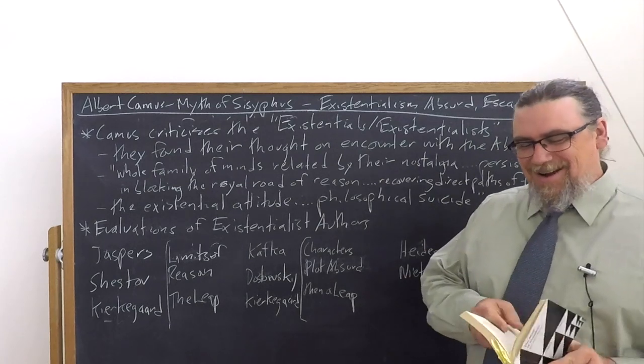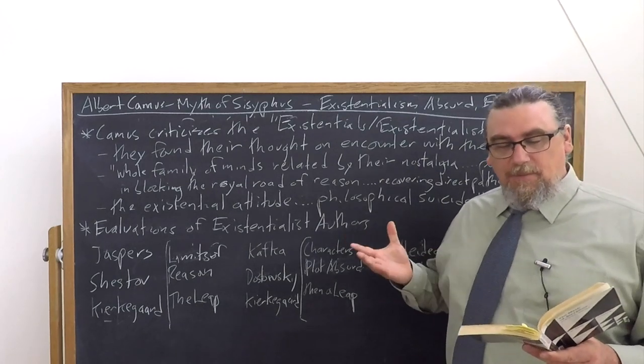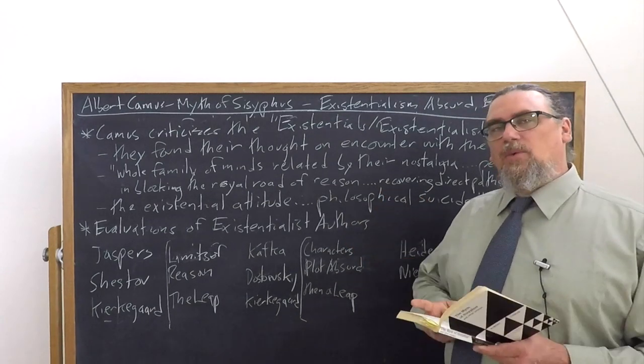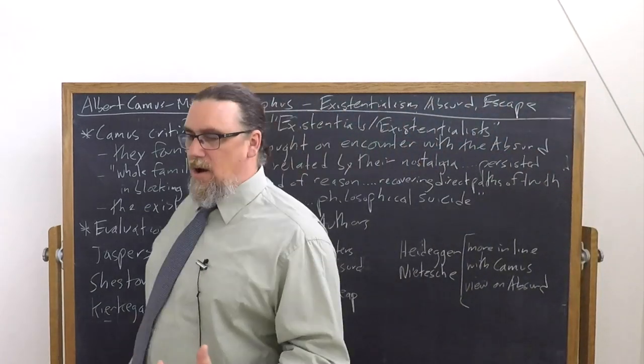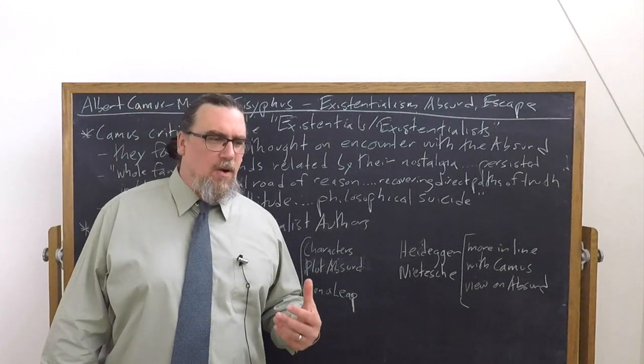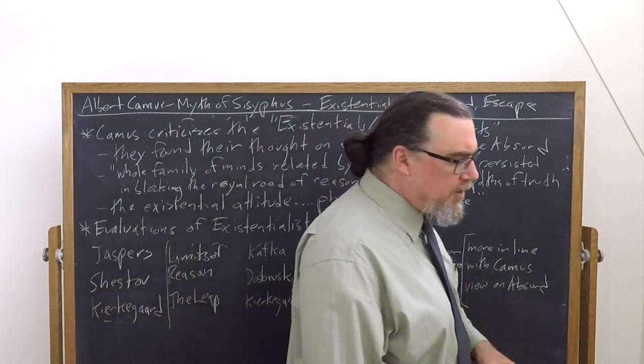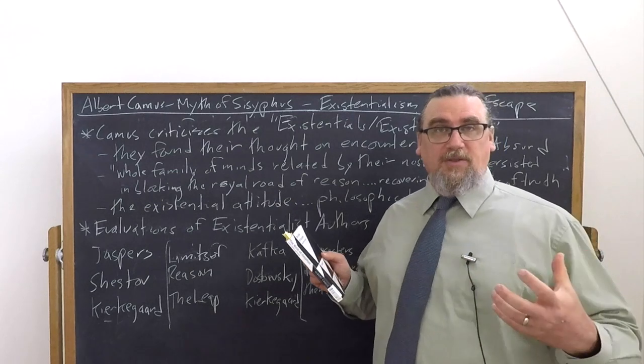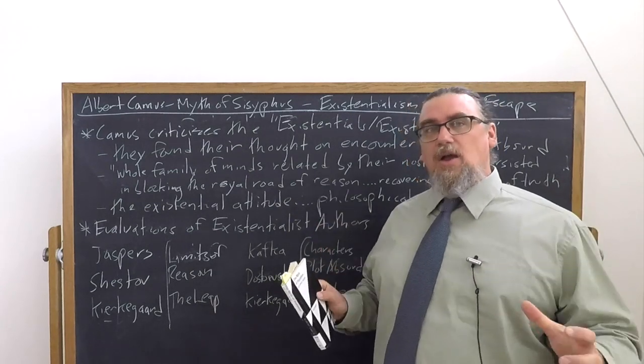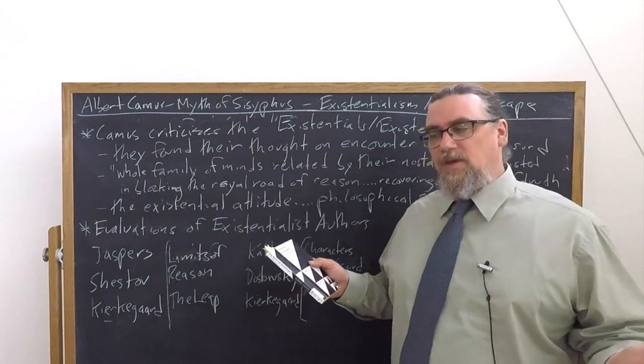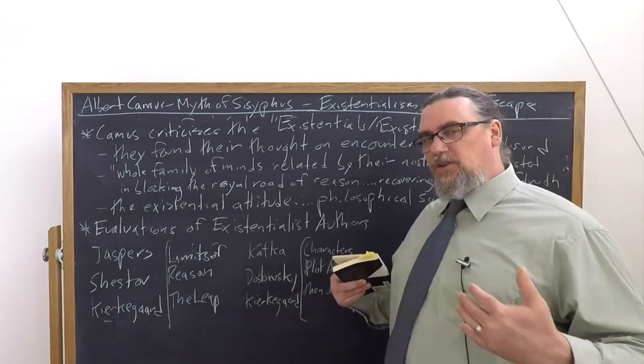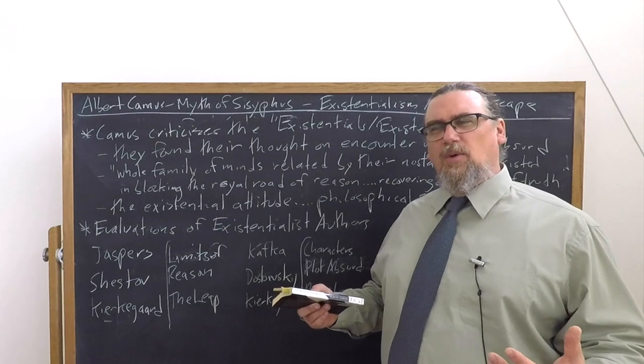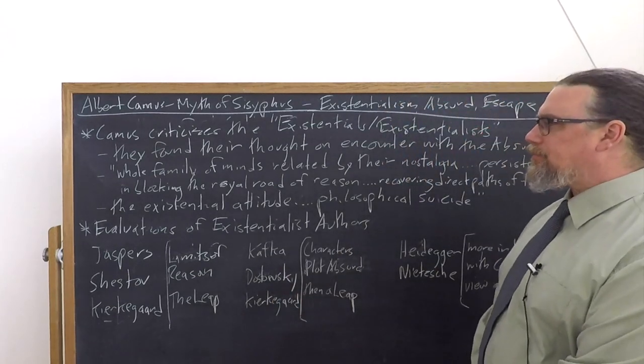And every time that we tell ourselves that we've attained it or that it's there on the horizon, Camus says we're actually unfortunately deluding ourselves. So the existentialists are in this family. They have different methods or aims, but they have persisted in blocking the royal road of reason. They are not rationalists. While they're using the tool of reason, they're also being critical of it and its pretensions. And he says, recovering the direct paths of truth. Existentialism, just as much as the philosophy of the absurd, focuses on concrete existence, on real life situations, and on relations between human beings to elucidate the truths or the experiences or the essences even out of them.